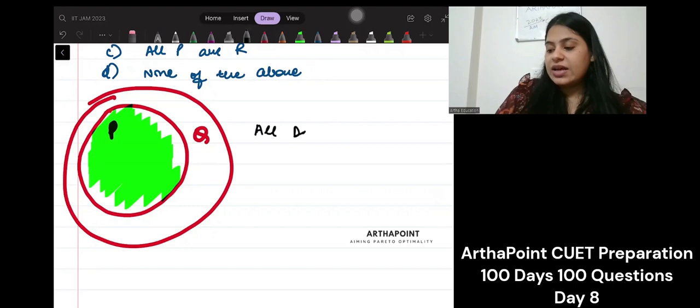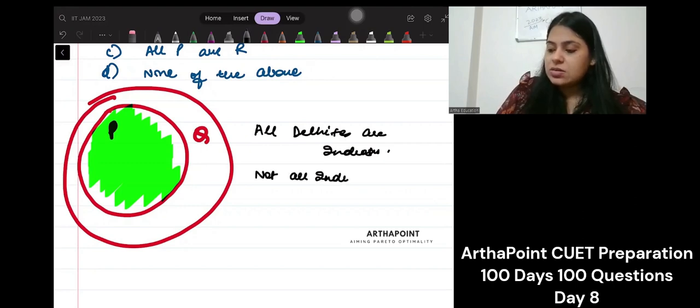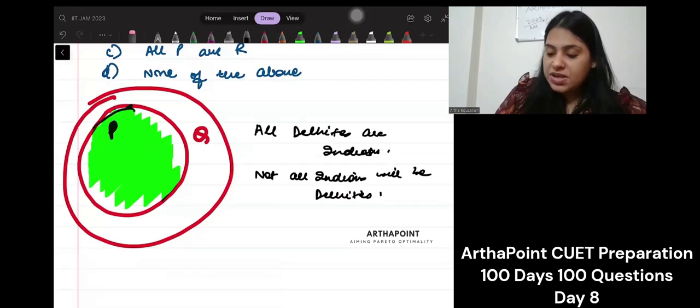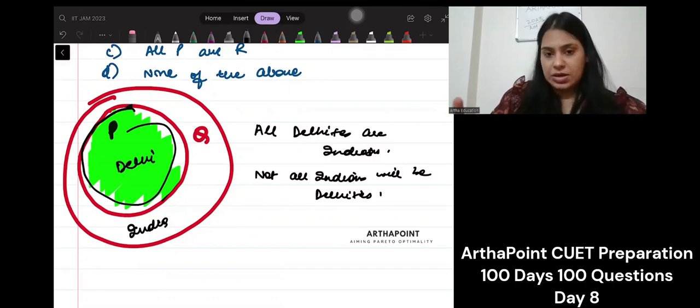all the Delhiites are Indians. Suppose I say this. But not all Indians will be living in Delhi, right? So not all Indians will be Delhiites. Are you getting it? So all P is Q. This is Delhi. This is India. All P are Q.